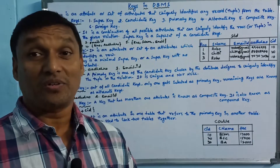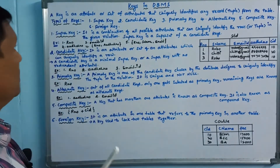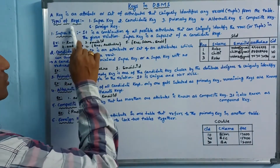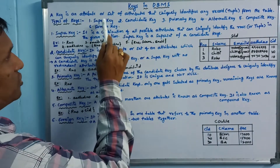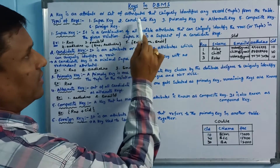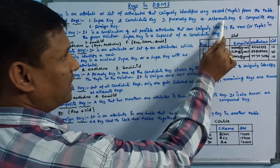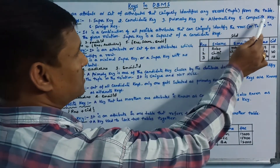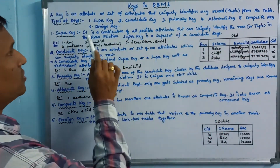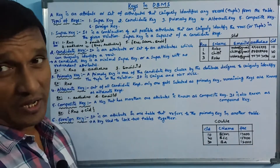We can see the types of keys. The types of keys are: super key, candidate key, primary key, alternate key, composite key, and foreign key.